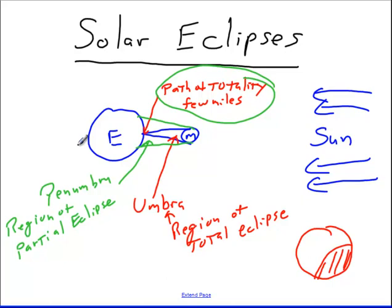Eclipses do not occur every month. A solar eclipse will occur only at the time of new moon. So the only possible time that a solar eclipse can occur is when the moon is new. That'll happen about 12 times a year. But it's even less than that because the Earth, the moon, and the sun have to be lined up perfectly, and they do not always line up perfectly.